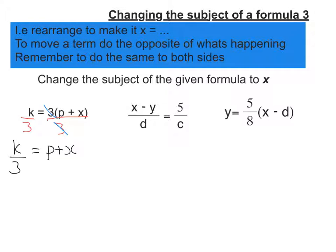That's p plus x, so I need to do the opposite to get rid of the p, put it onto the other side. So take away p, and I'm going to flip both sides now. So I'm going to get x is equal to k over 3 minus p, and there's my answer.